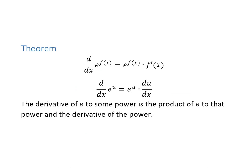This next theorem formalizes the derivative of e to the x combined with the chain rule. So instead of x, if we have a function as our exponent, after writing the derivative you have to also take the derivative of the exponent itself.